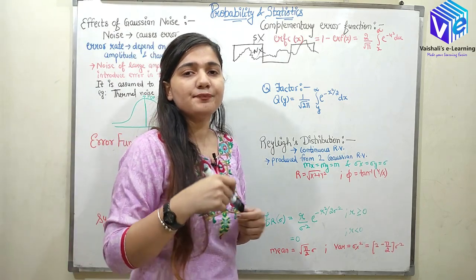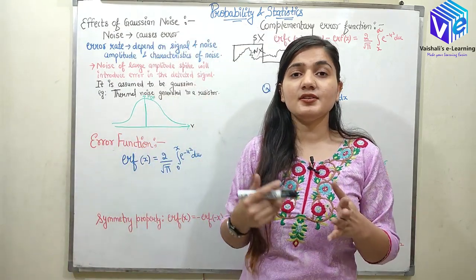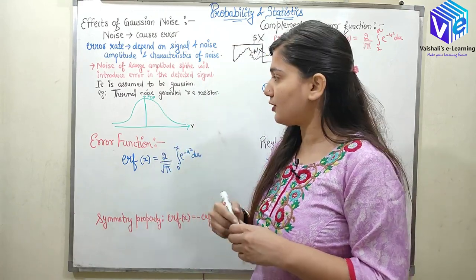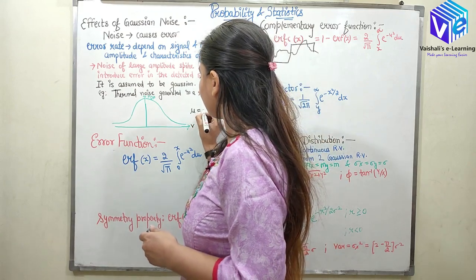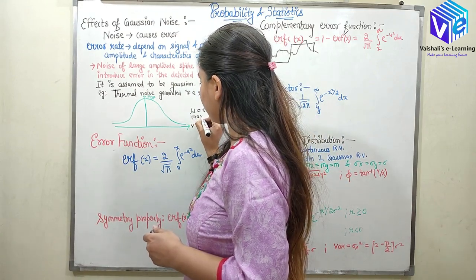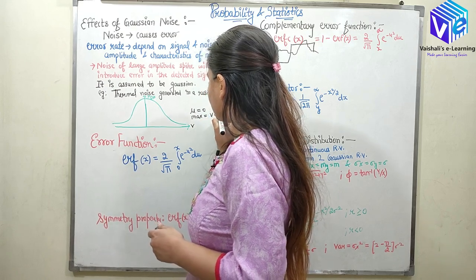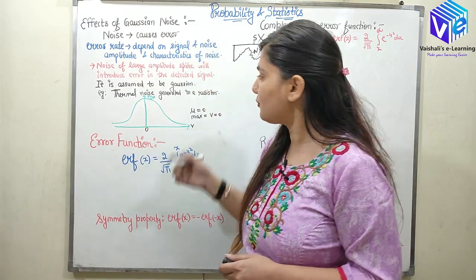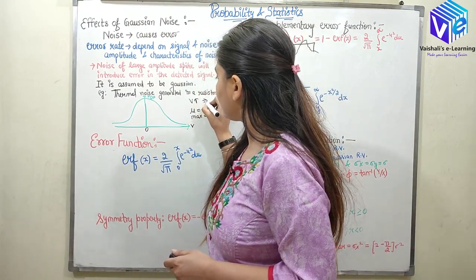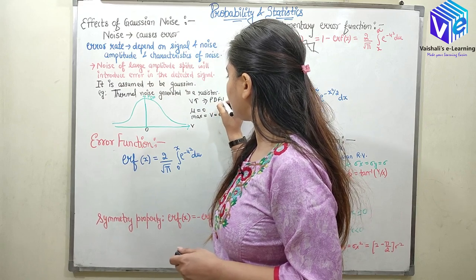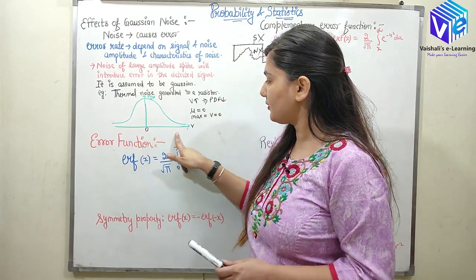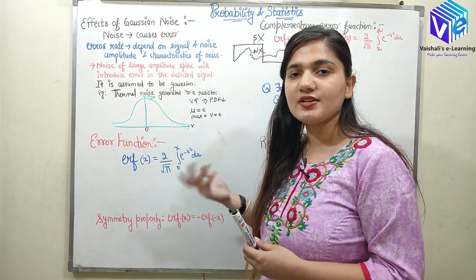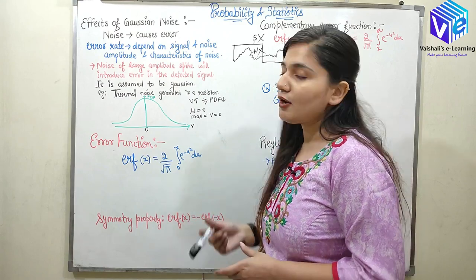When current passes through a resistor, some thermal noise is generated which is of Gaussian nature. You can see the mean is at 0, meaning the maximum value is at V equals 0. As V increases, the PDF decreases. So whenever you go towards increasing values of V, the PDF decreases — this is the characteristic of Gaussian noise.